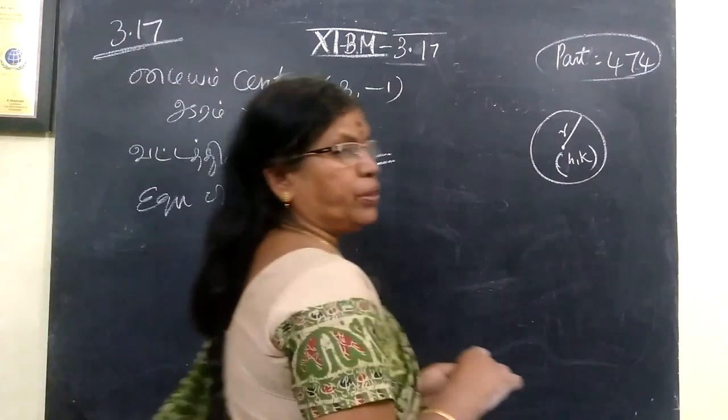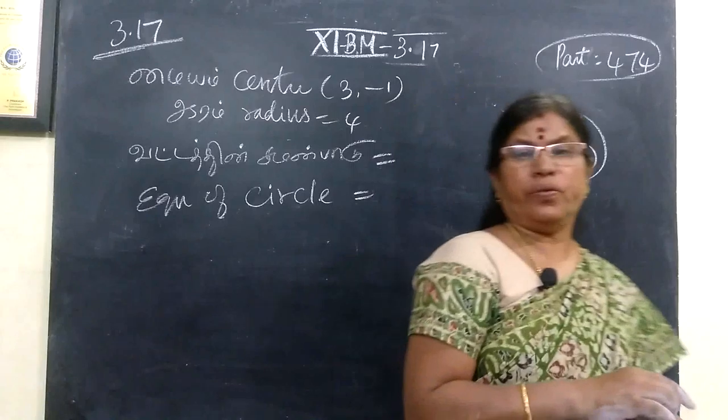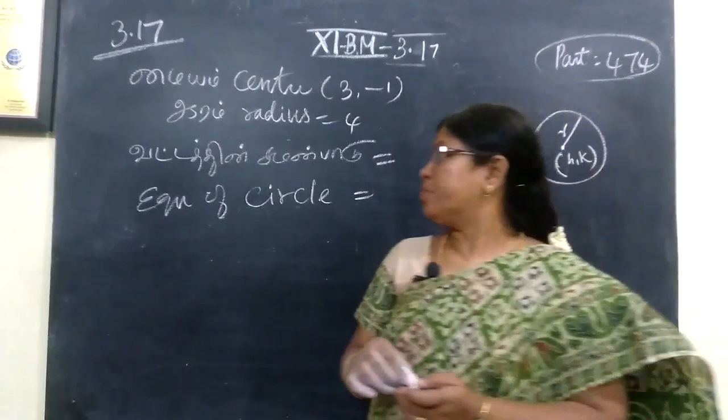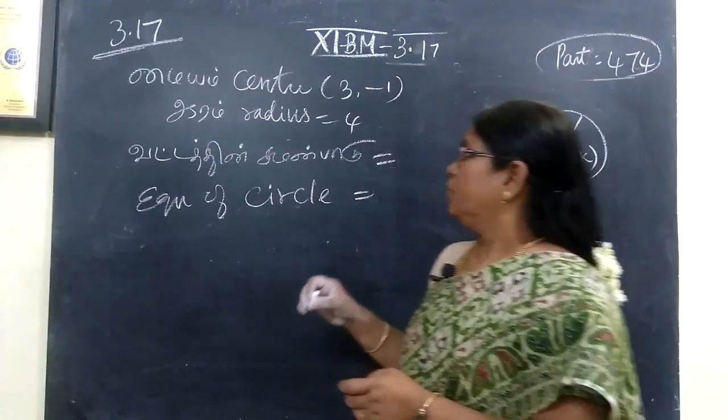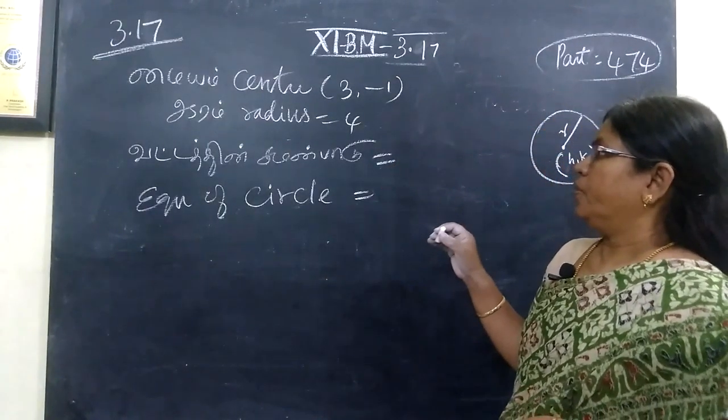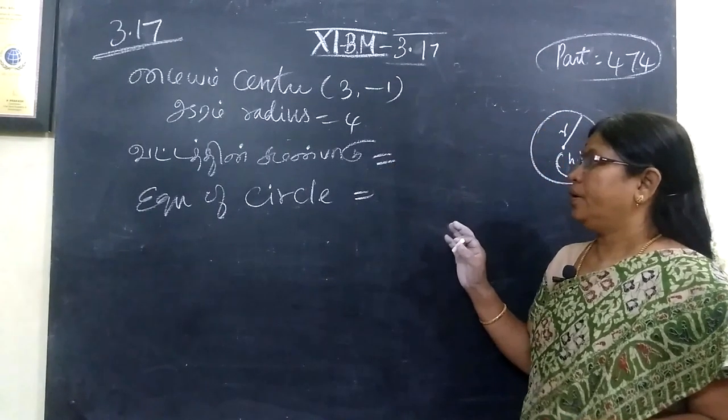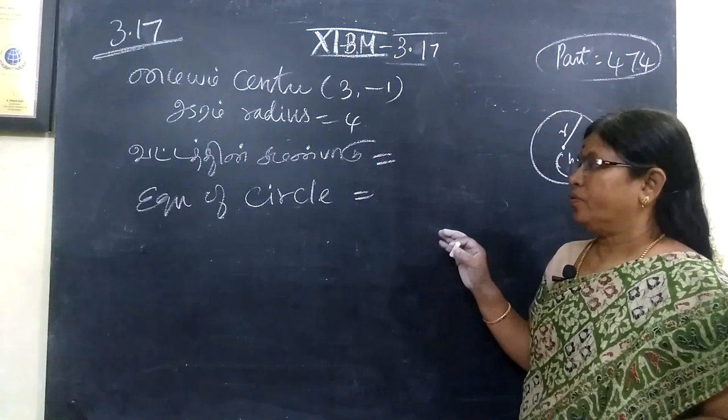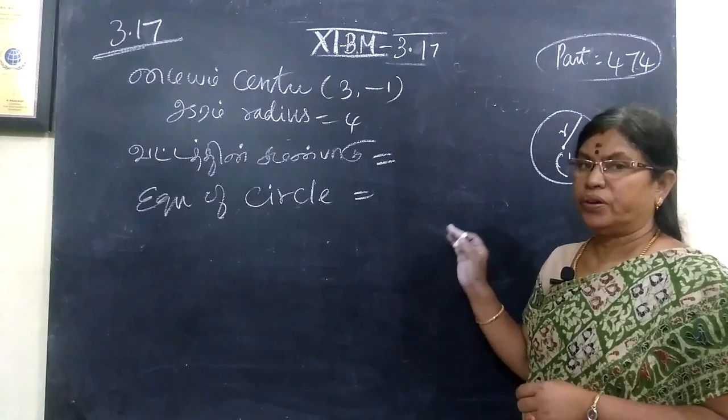Now we want to see Example 3.17 from 11th business math. Here you are given the center, radius, and the equation of circle.